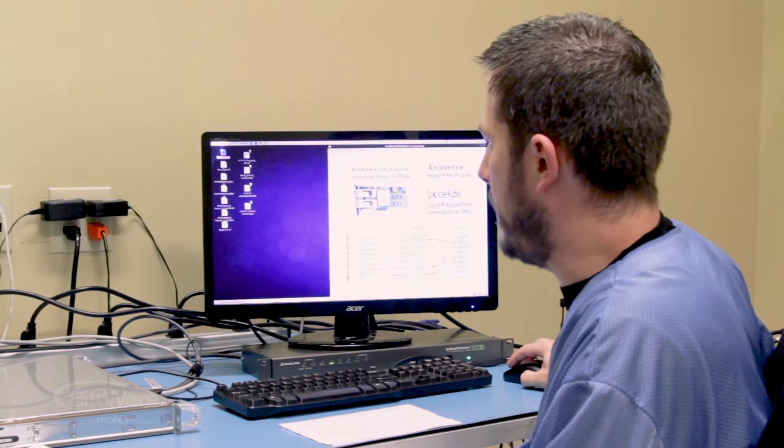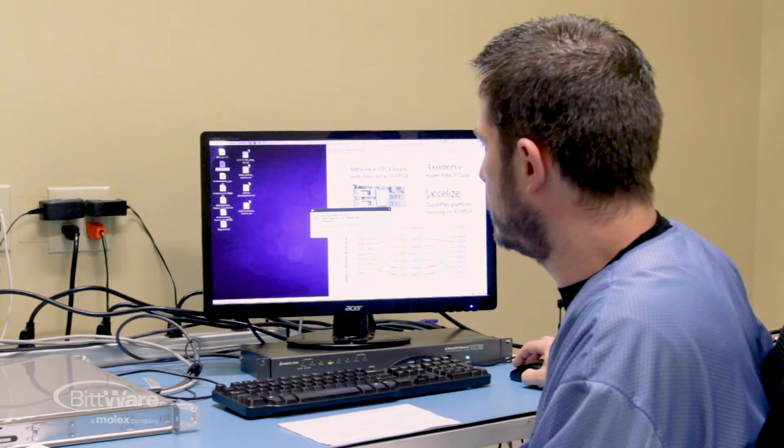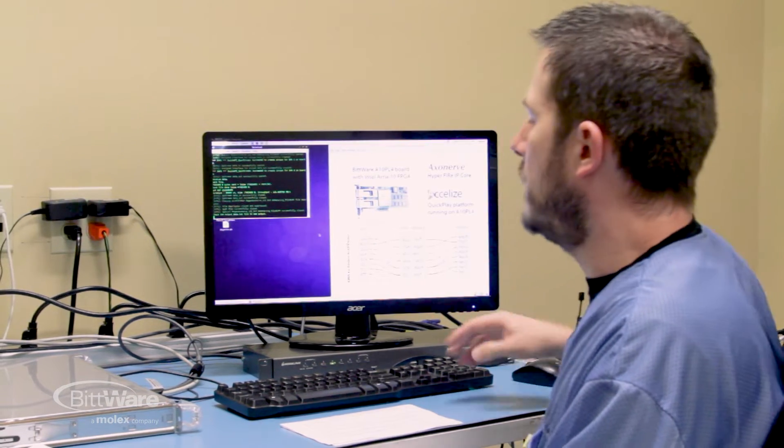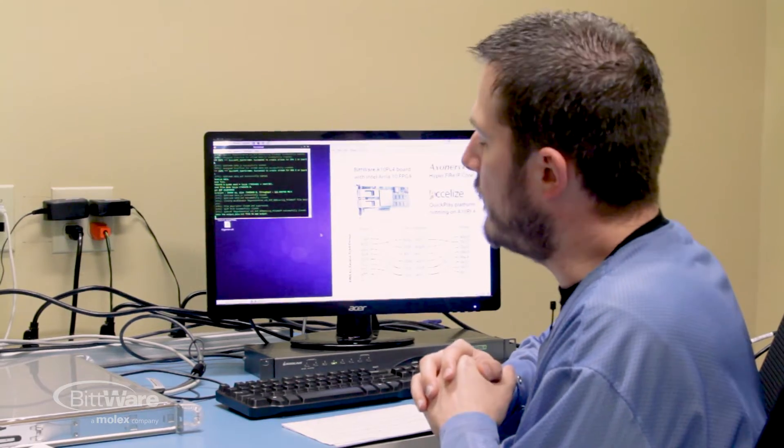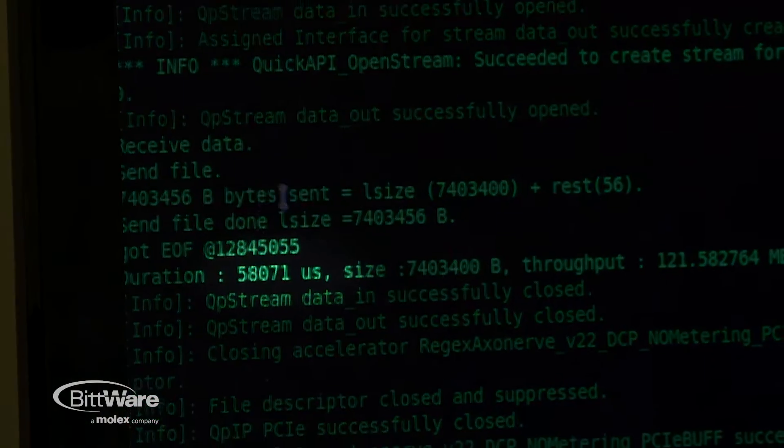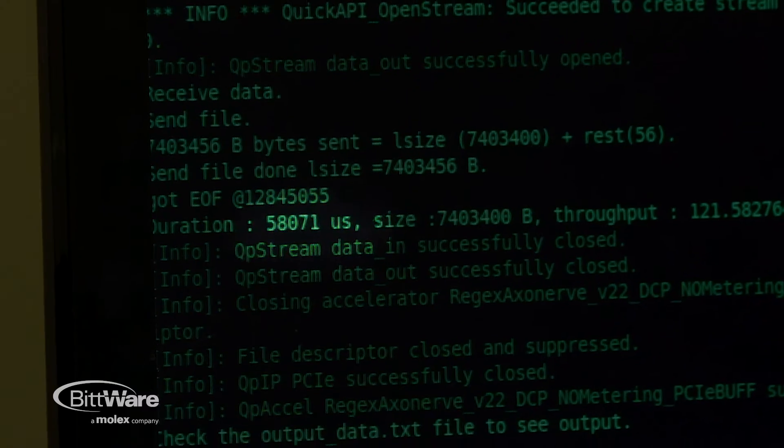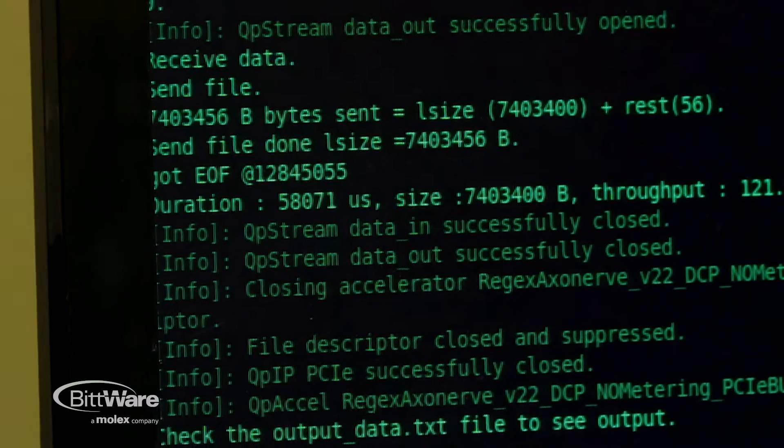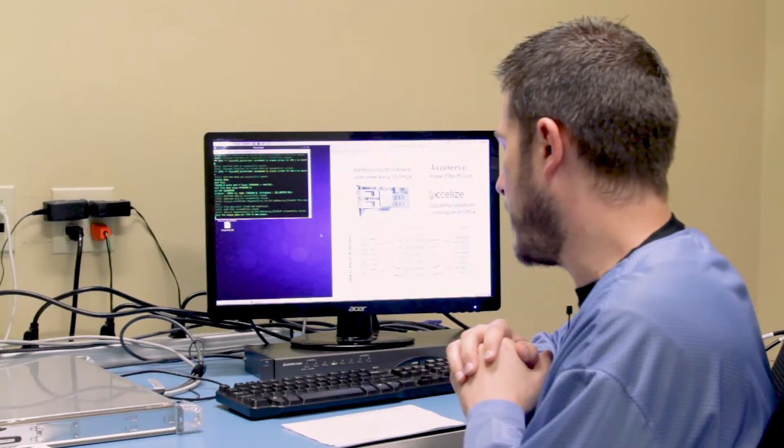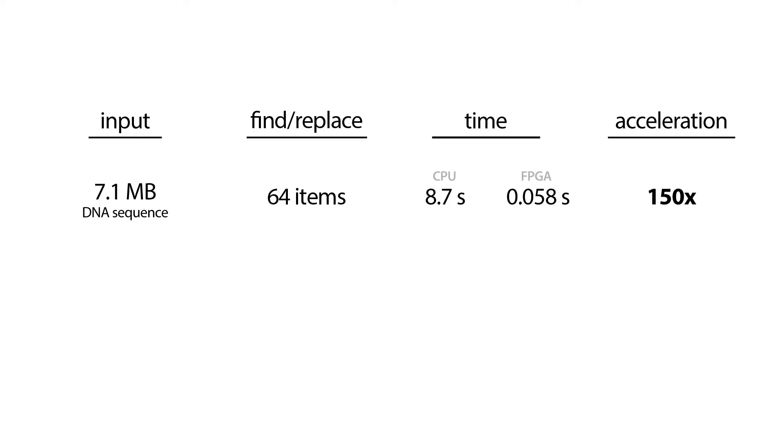Now let me run it on the FPGA. So it actually already ran. It only took 58 milliseconds, which is about a 17th of a second. So if you think about that, 58 milliseconds versus 8.7 seconds, that's about 150 times faster on the FPGA.